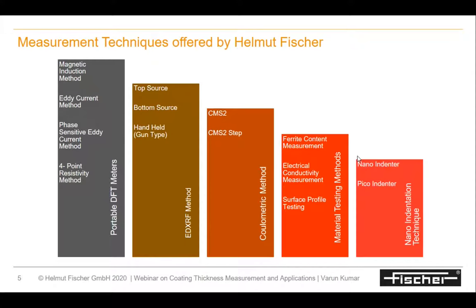The coulometric method is another form of coating thickness measurement, basically for the auto industry, hard coatings, or decorative finish items. Being a destructive method, it is used to find multi-layer nickel platings in decorative coating systems. We also provide instruments for material testing — ferrite content measurement, electrical conductivity, and surface profile testing. The last is the nano indentation technique, which helps in determining the hardness properties of platings.